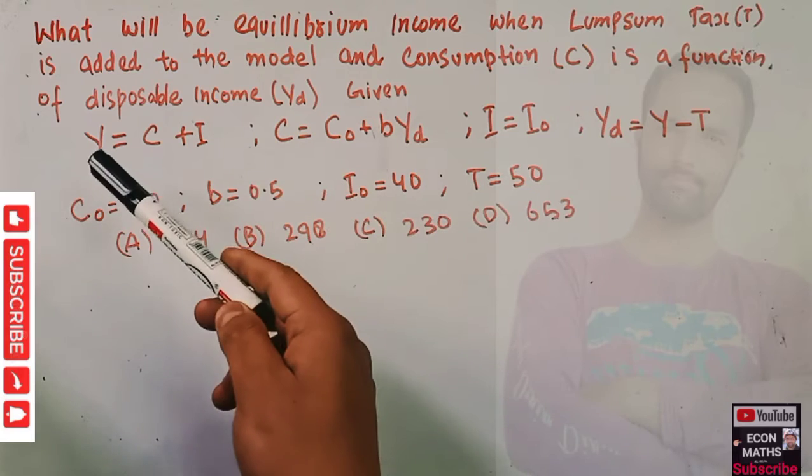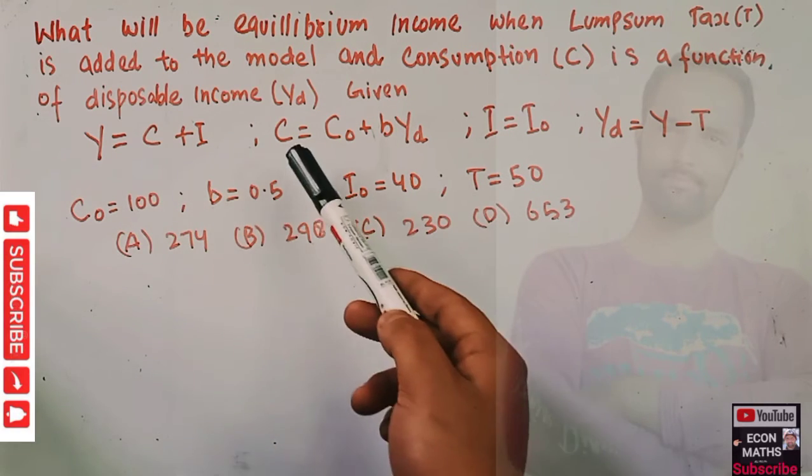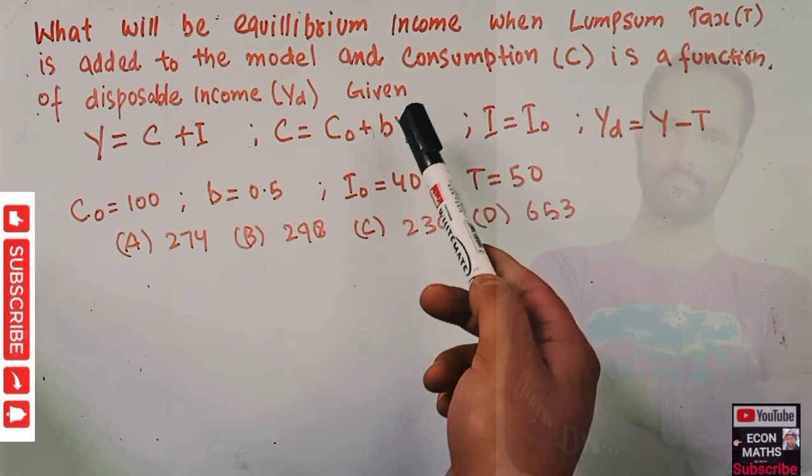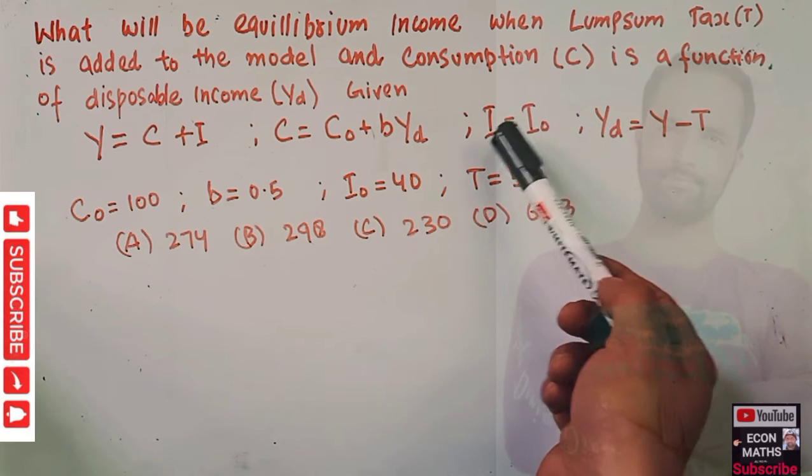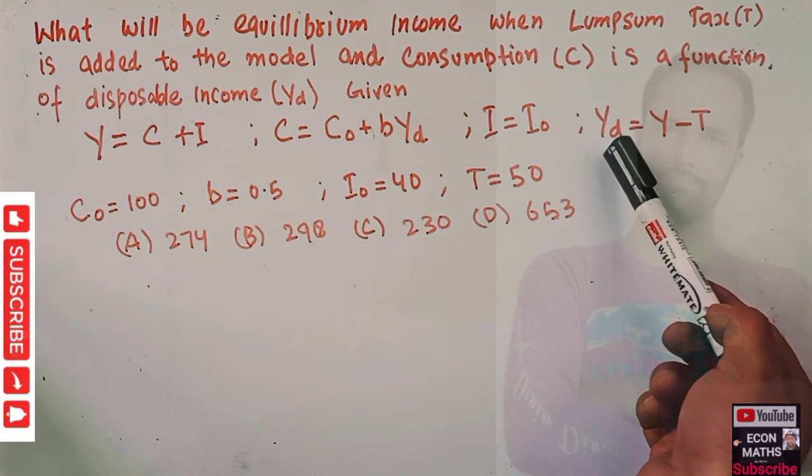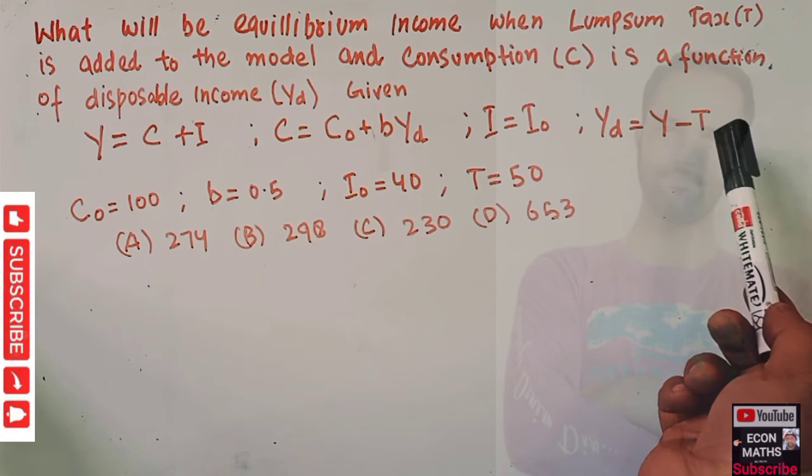Given Y equals C plus I, where Y is income, C is consumption expenditure, I is investment expenditure. Consumption is a function C naught plus b times Y subscript d. I equals I naught, meaning investment is autonomous. Disposable income equals Y minus T, the income left when we subtract taxes.